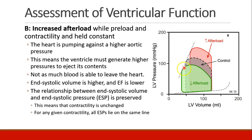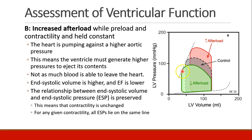The relationship between end systolic volume and pressure is preserved because contractility is unchanged — all end systolic pressures lie on the same line for a given contractility. On the other hand, if we open up a patient's aortic valve or give a vasodilator that decreases afterload, we have the same ventricular filling but can pump out blood with less pressure — in fact, so much less that we can get a little more blood out than before. As a result, ejection fraction actually goes up and ejection pressures go down.